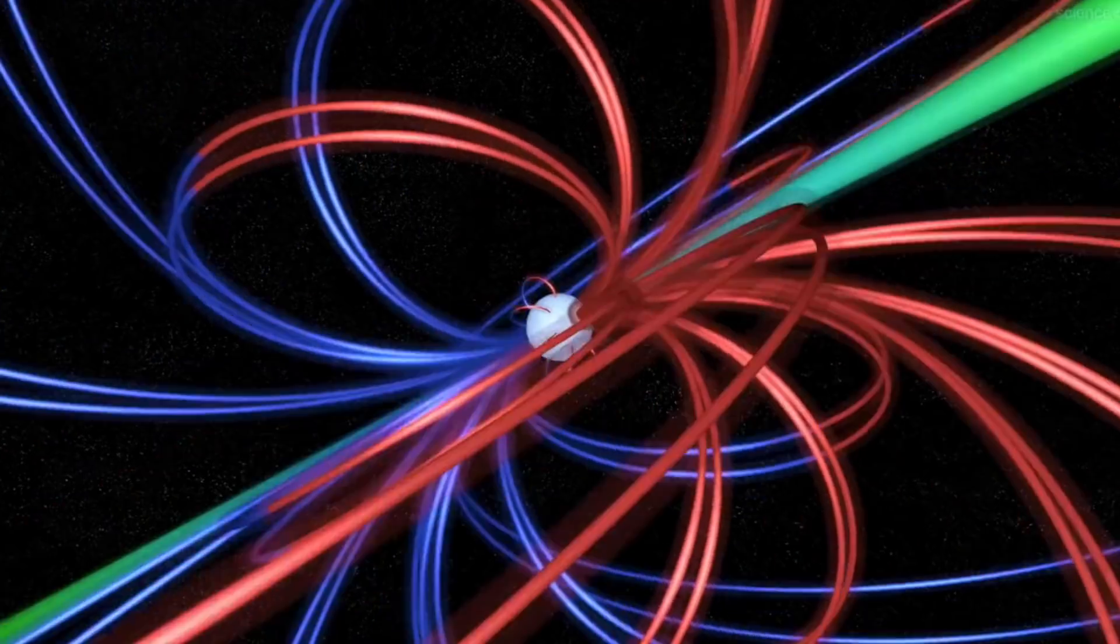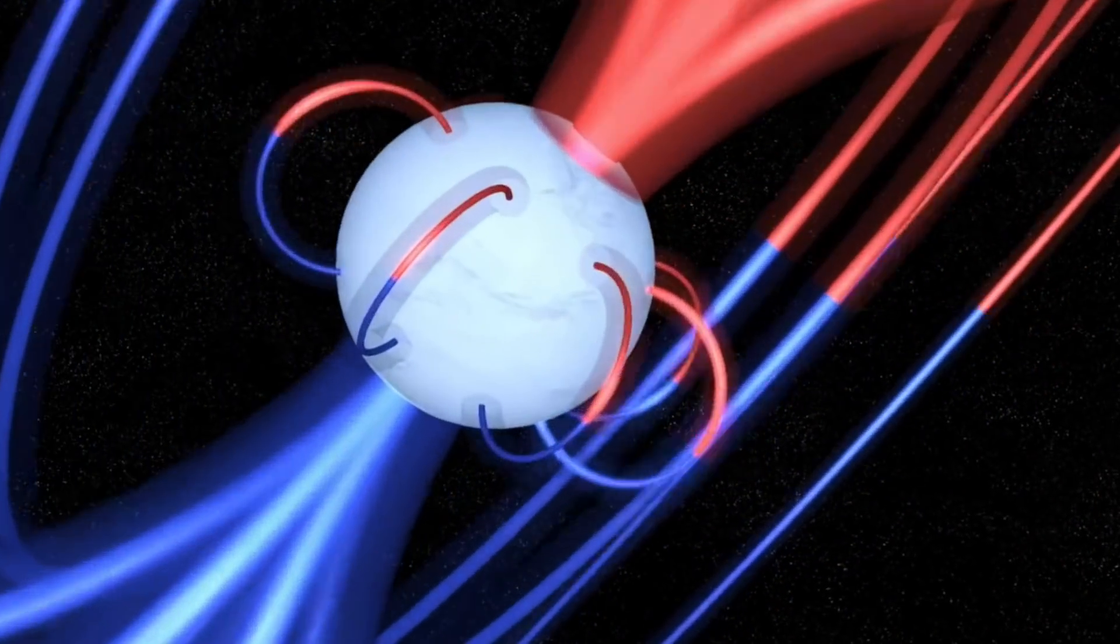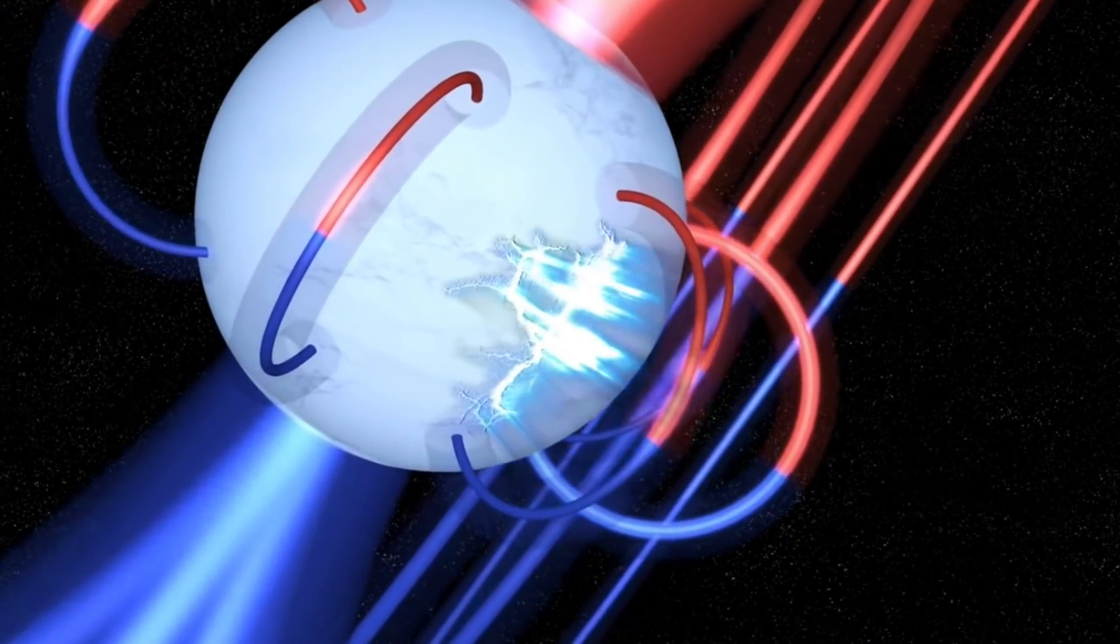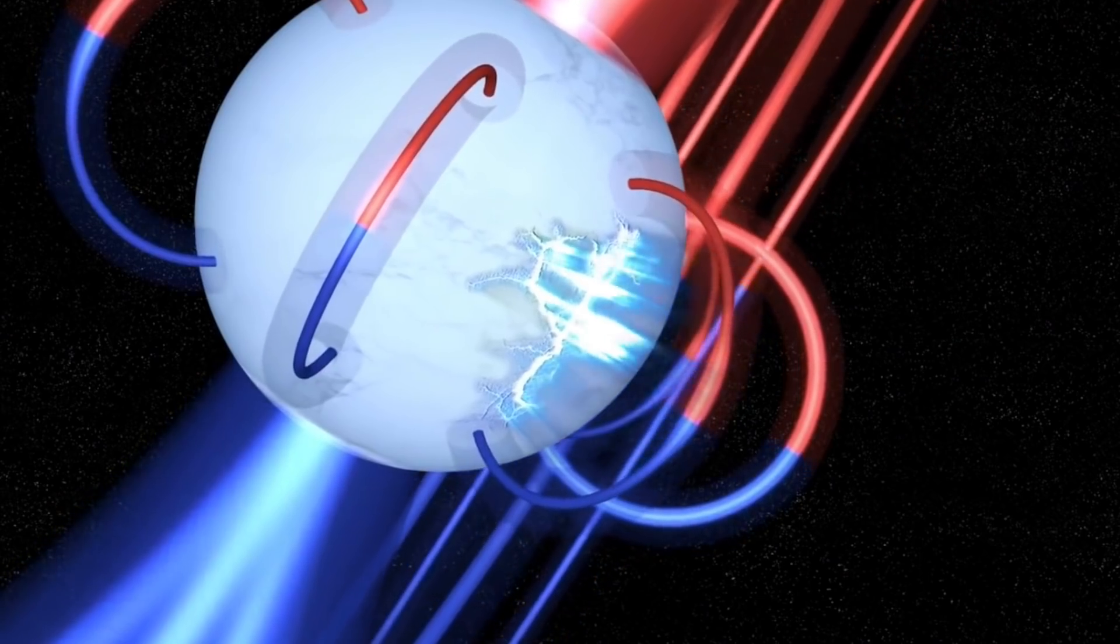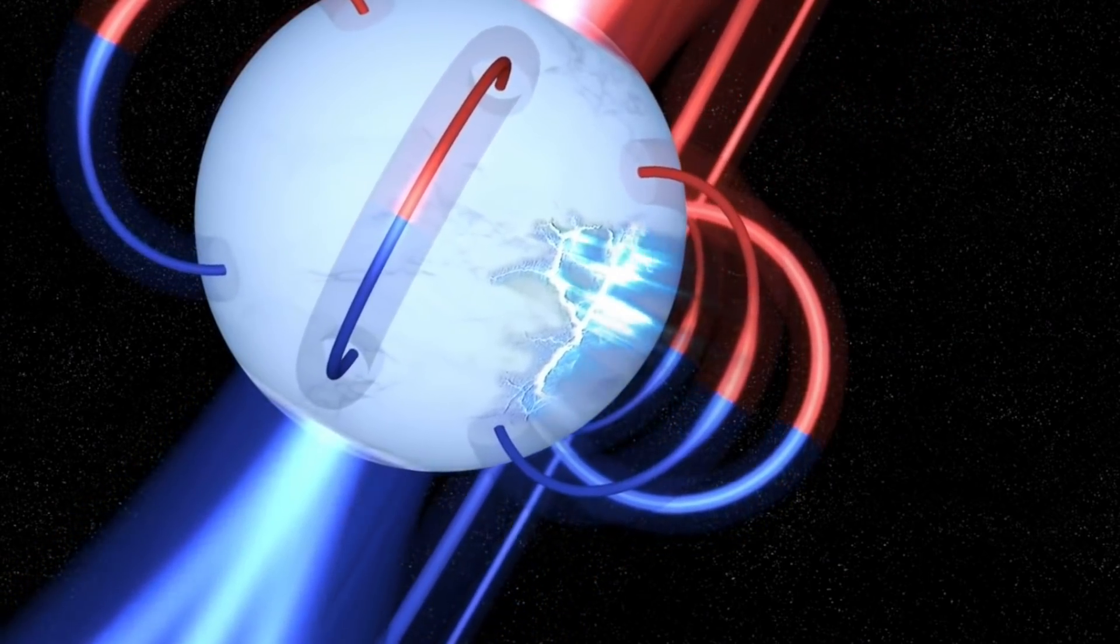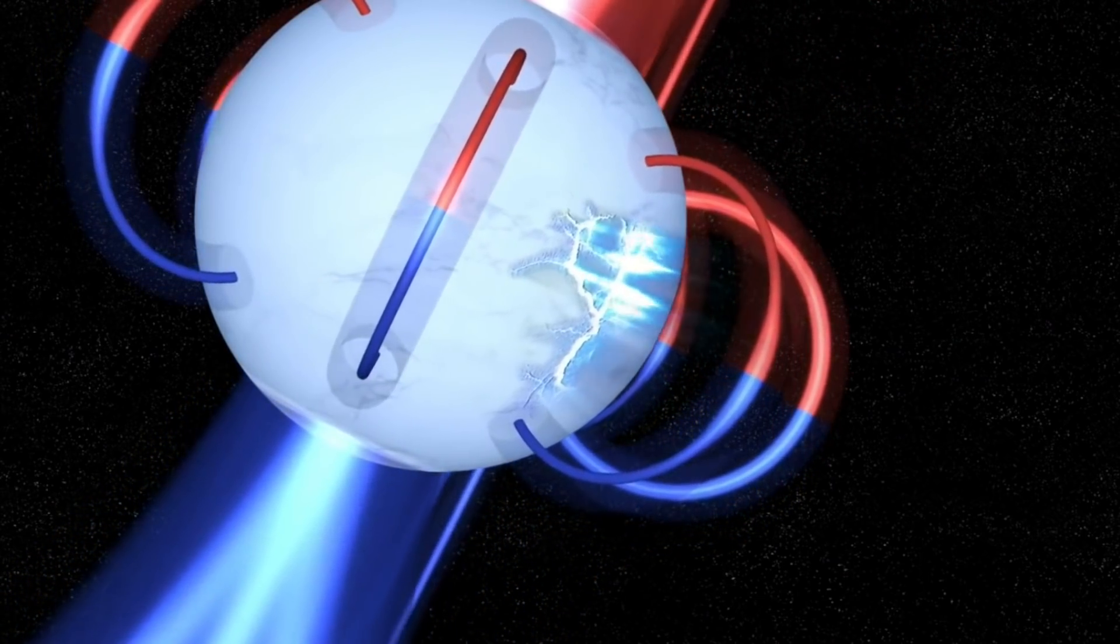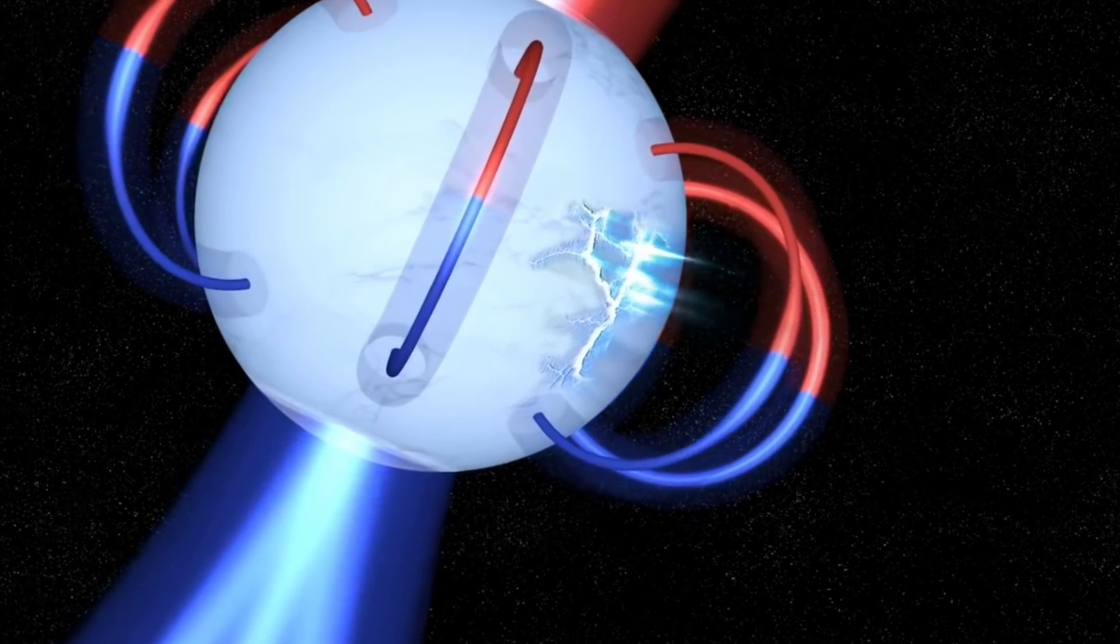And it's exceptionally similar to how a magnetar burst works. Essentially, so much energy goes through its lowest level L-shell magnetic fields that its pathway directly to ground becomes the least resistant pathway, and they say it literally cracks the surface of the star.